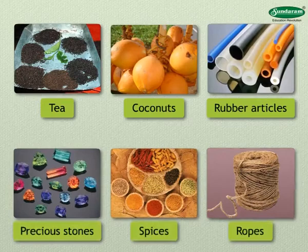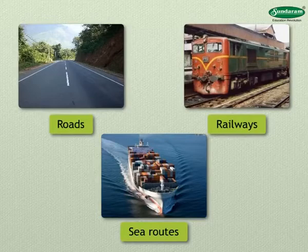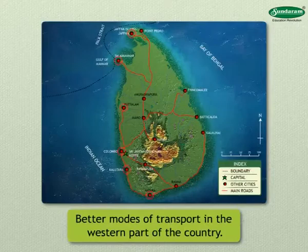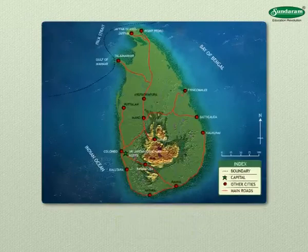Transport in Sri Lanka is mainly carried out by roads, railways, and sea routes. The modes of transport have developed better in the western part of the country. The important ports are Colombo, Jaffna, and Trincomalee. There is an international airport at Colombo.